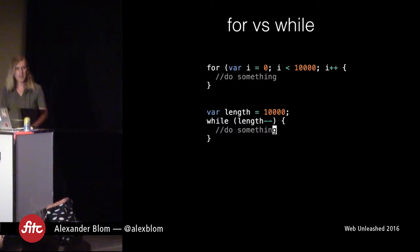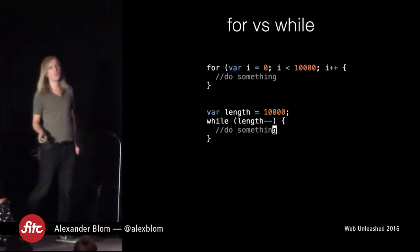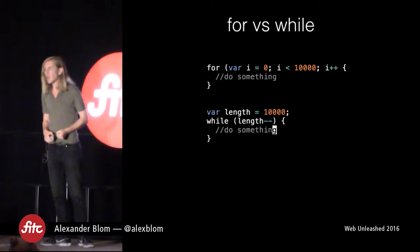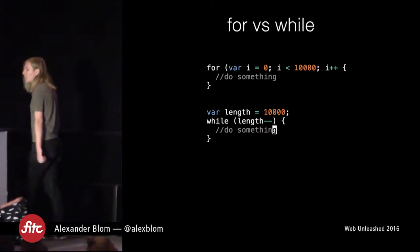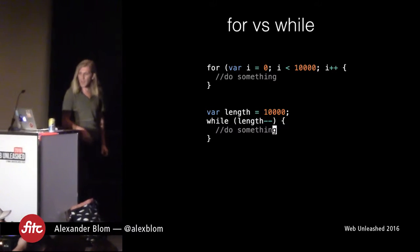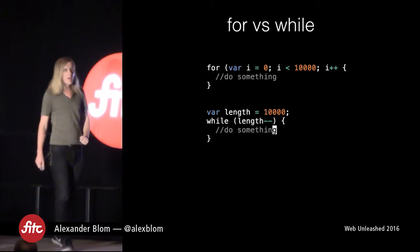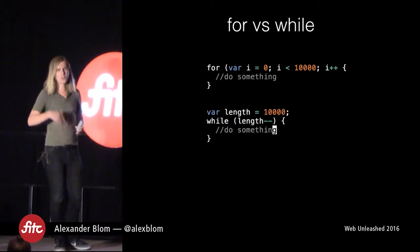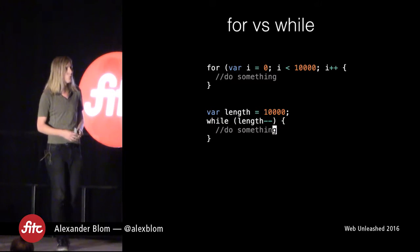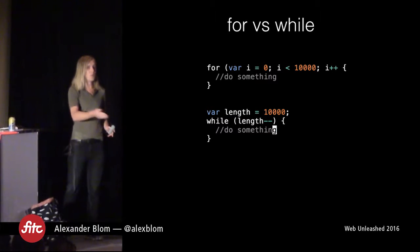An interesting little thing to know: a for loop doing var i equals zero, i less than 10,000, i++ will actually run slower than a decrementing while loop. We're not talking about anything noticeable — I still write for loops too — but the while loop is technically faster. Good to know, but don't go rewriting your JavaScript over it.